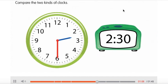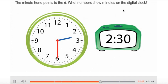Compare the two kinds of clocks. The minute hand points to the 6. What numbers show minutes on the digital clock? Select your answer.